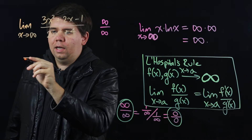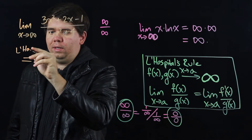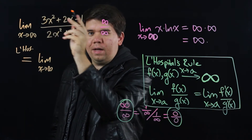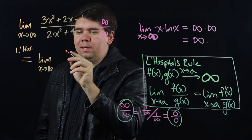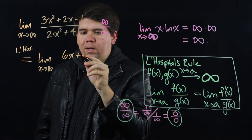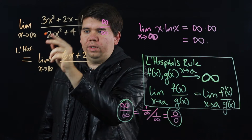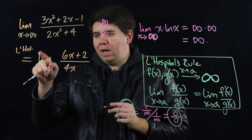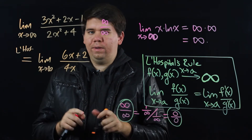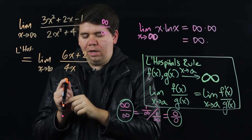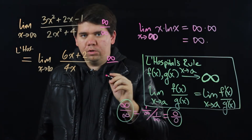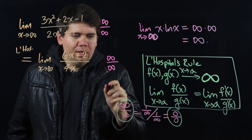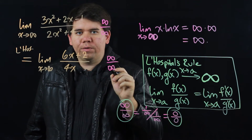Applying L'Hôpital's rule, we get that the limit as x goes to infinity is the derivative of the top over the derivative of the bottom. The derivative of the top is 6x plus 2, all over the derivative of the bottom, which is 4x. Taking the limit as x goes to infinity, the top — 6 times an arbitrarily large number — grows arbitrarily large. The bottom — 4 times an arbitrarily large number — is also arbitrarily large. So again we get something of the form infinity over infinity.